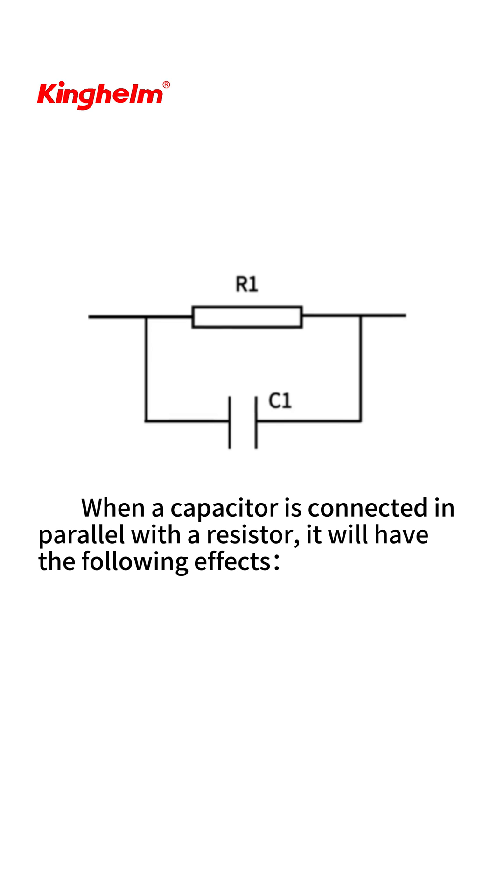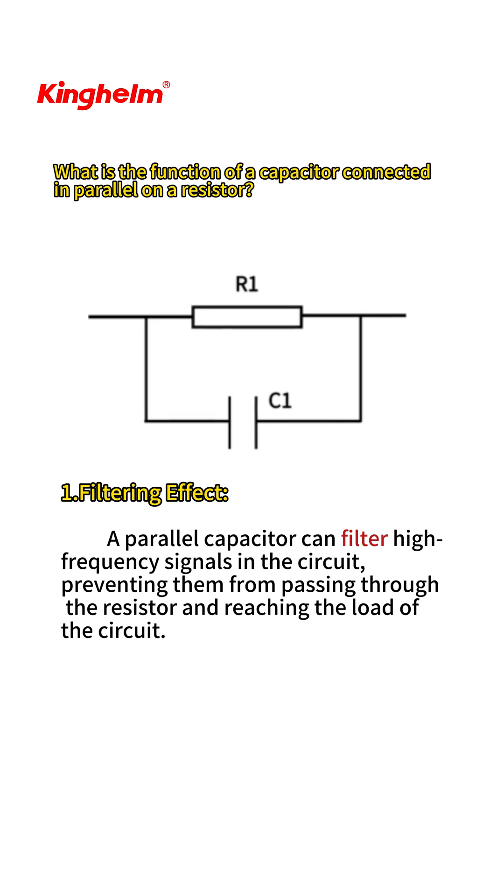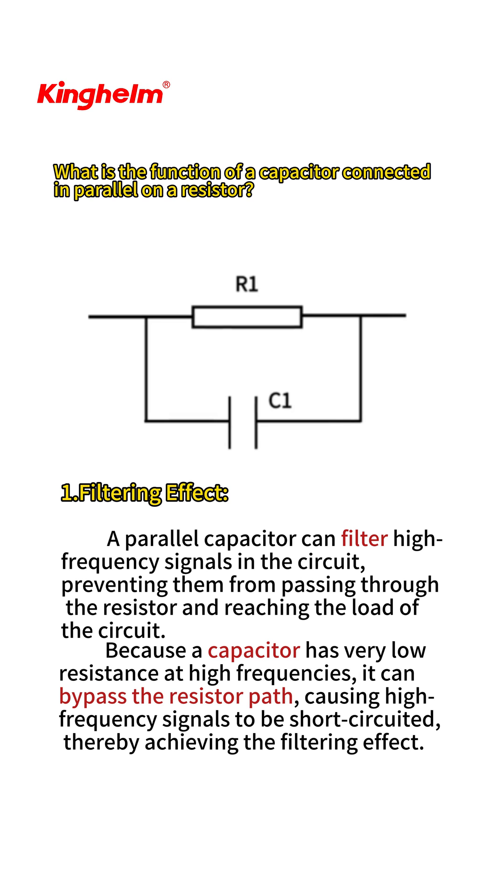When a capacitor is connected in parallel with a resistor, it will have the following effects. First, filtering effect: a parallel capacitor can filter high-frequency signals in the circuit, preventing them from passing through the resistor and reaching the load of the circuit. Because a capacitor has very low resistance at high frequencies, it can bypass the resistor path, causing high-frequency signals to be short-circuited, thereby achieving the filtering effect.